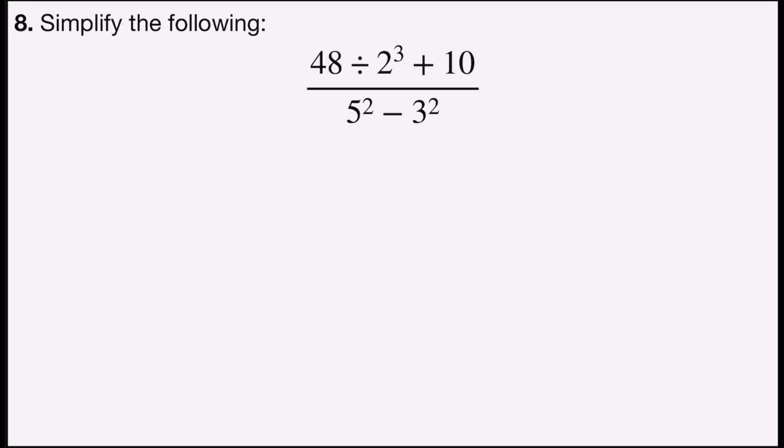Problem number 8 says simplify the following: 48 divided by 2 cubed plus 10 over 5 squared minus 3 squared.